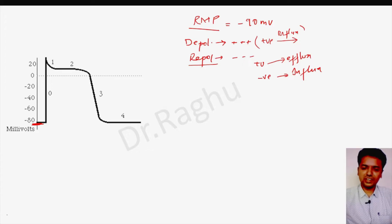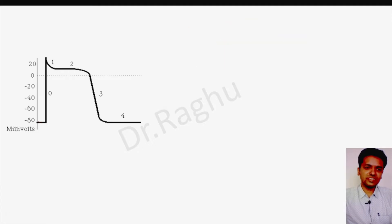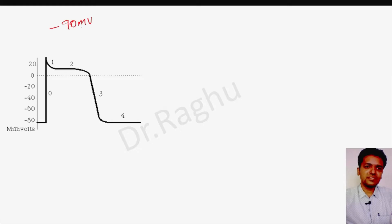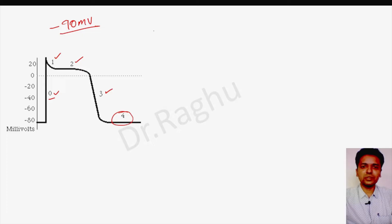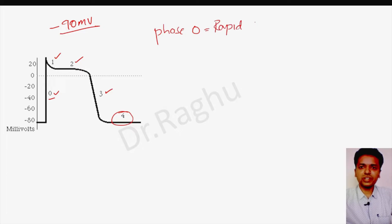The resting membrane potential is minus 90 millivolts. We have four phases: phase zero, phase one, phase two, and phase three. Phase four is nothing but the resting membrane potential. Phase zero is the phase of rapid depolarization.